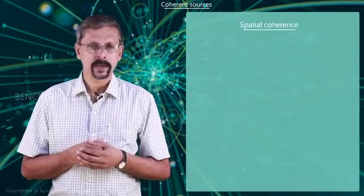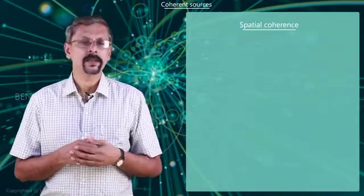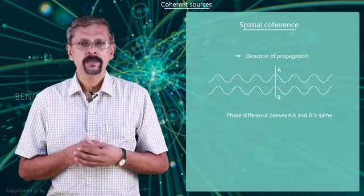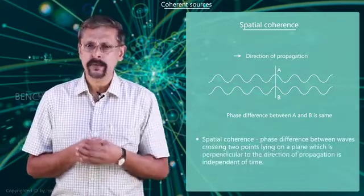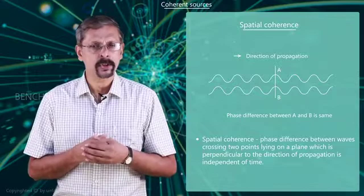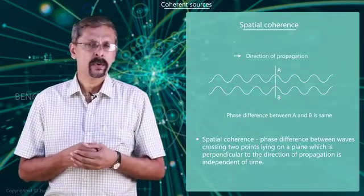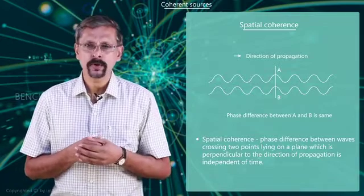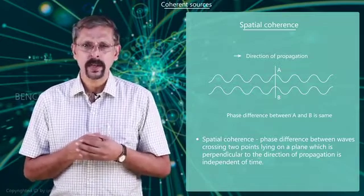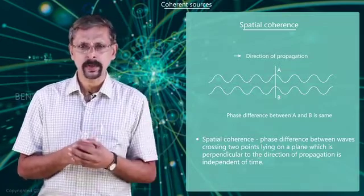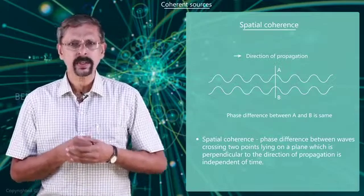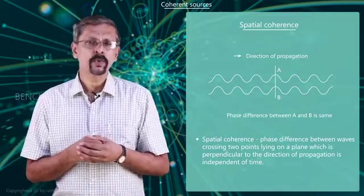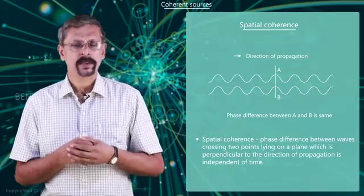Now about spatial coherence. Spatial coherence is a measure of the correlation between the phases of a wave at different points across, that is perpendicular to, the direction of propagation. If the phase difference between the wave crossing two points lying on a plane which is perpendicular to the direction of propagation is independent of time, the wave is said to have spatial coherence.